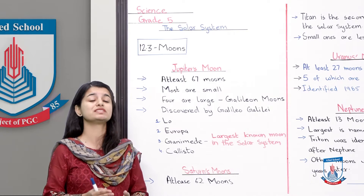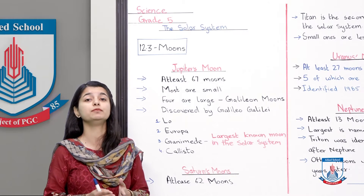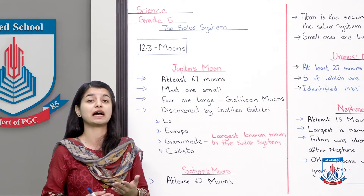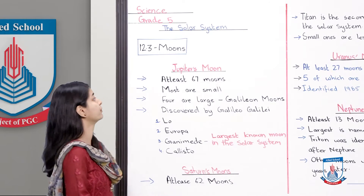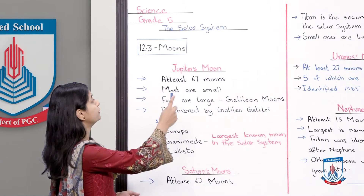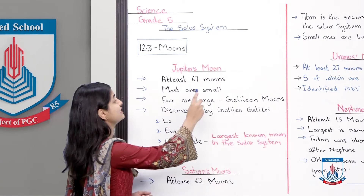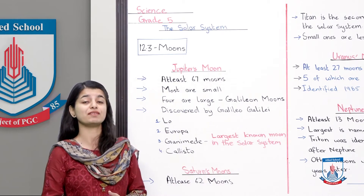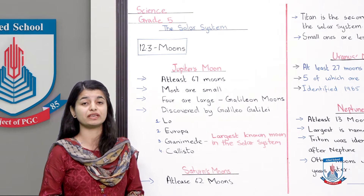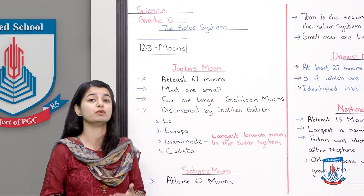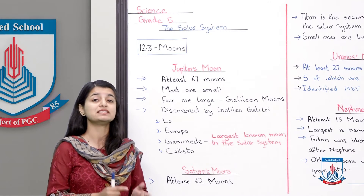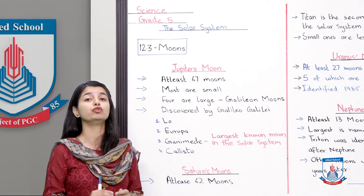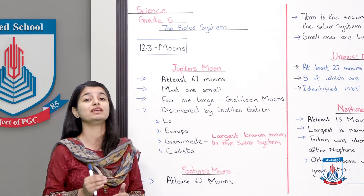Today we are going to study Jupiter's moon, which is more in number. Jupiter has at least 67 moons. At least 67 ka matlab hai ki kam az kam 67 hain, usse zyadha bhi ho sakti hain. Scientists say 'at least 67' because that is how many they have observed so far.